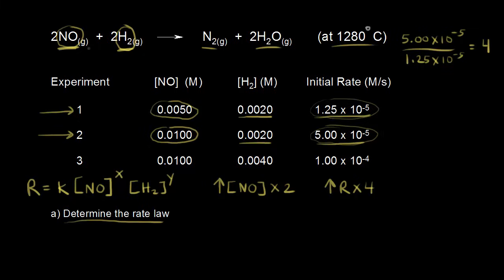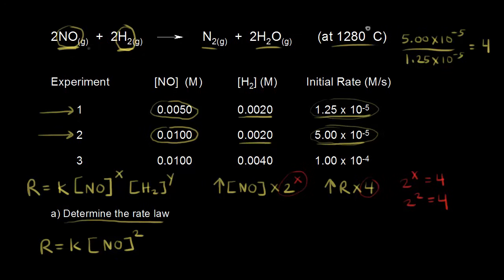Now we know enough to figure out the order for nitric oxide. From the previous video, we set up 2^x = 4. Obviously x equals two, since two squared is four. So the rate is equal to K times the concentration of nitric oxide squared — the reaction is second order in nitric oxide.